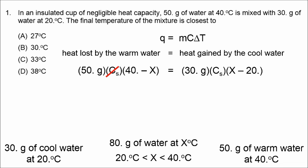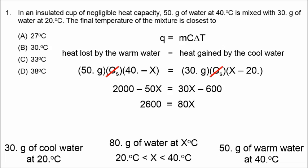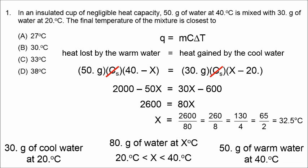We can cross off the specific heat of water on both sides and do a little algebra. We get 2,000 minus 50X equals 30X minus 600, then 2,600 equals 80X. So X equals the final temperature of the water, which is 2,600 divided by 80, or 130 over 4, and the answer is approximately 33 degrees Celsius.